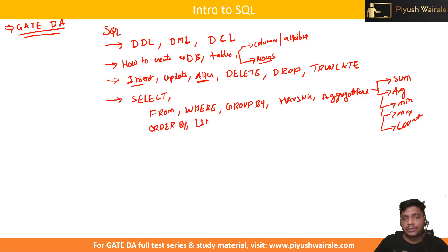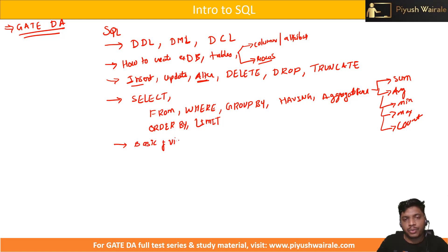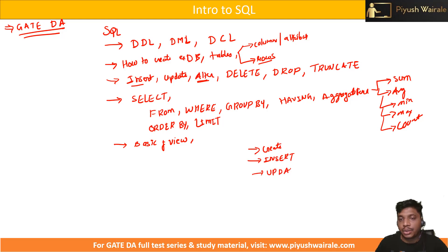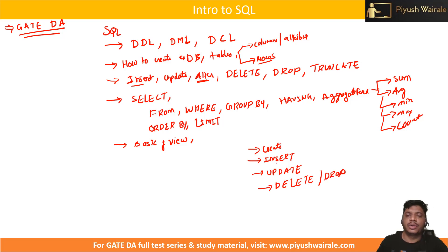We'll also cover the ORDER BY clause, LIMIT clause, and all these things in this introduction to SQL. Also, a basic overview of VIEW — what a view is, just the syntax part. We're not going to discuss it in detail because it is not required for the GATE DA part. But insert, update, alter, delete, drop, truncate, and select — all that we are going to discuss. You should know how to create a table, how to insert a record, how to update a table, how to delete or drop a particular table or record, and how to view or select data from a particular table.